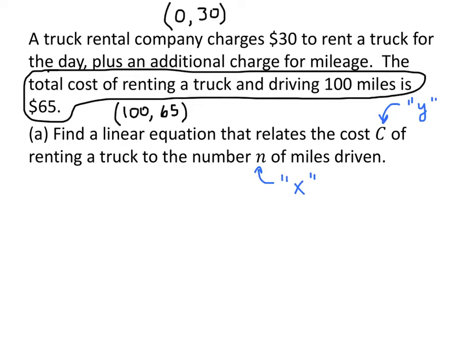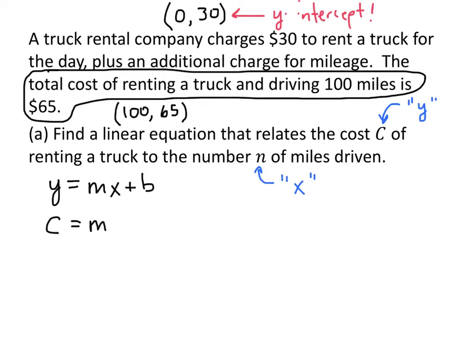Now we figure out which form for a line to use: point-slope or slope-intercept. We're given the Y-intercept — the point (0, 30) is the Y-intercept of this line. When we have the Y-intercept, we use the easier form, which is slope-intercept form: Y equals MX plus B. Here Y is really C (the cost variable), M is the slope which we don't know yet, X is the variable N (number of miles), and B is the Y-intercept, which is 30.